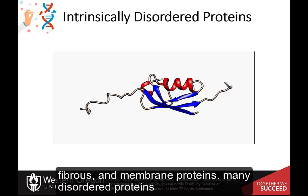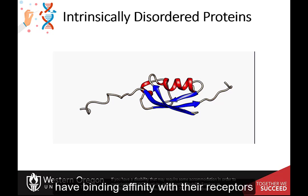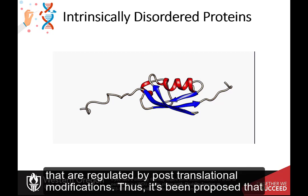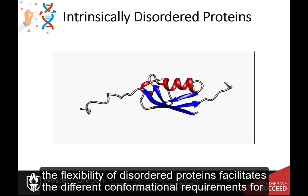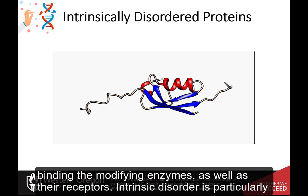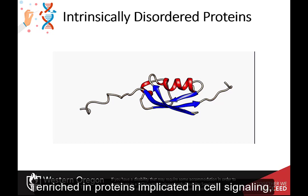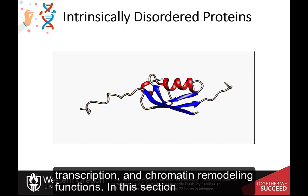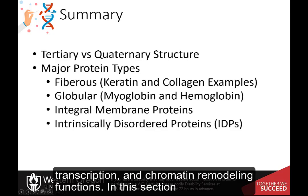Many disordered proteins have binding affinity with their receptors that are regulated by post-translational modification. It has been proposed that the flexibility of disordered proteins facilitates the different conformational requirements for binding the modifying enzymes as well as their receptors. Intrinsic disorder is particularly enriched in proteins implicated in cell signaling, transcription, and chromatin remodeling functions.